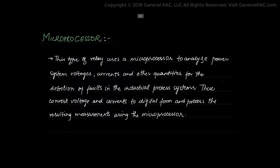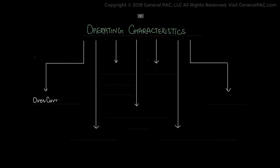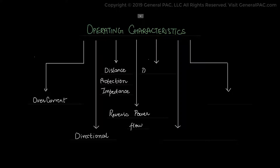For operating characteristics, we have many different operating characteristics for a protective relay and we will discuss some of them, including overcurrent relays, directional relays, distance protection and impedance relays, reverse power flow relays, differential relays, thermal overload relays, and pilot relays.